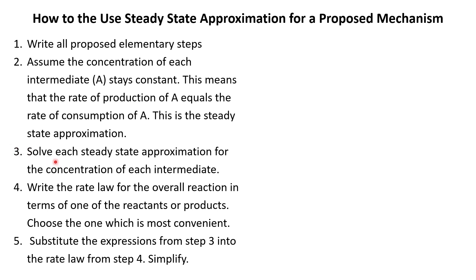Step three is we're going to solve each steady state approximation for the concentration of each intermediate. You may have one intermediate, two intermediates, or more, so you might have multiple steady state approximations. Step four is we're going to write the rate law for the overall reaction in terms of one of the reactants or products — whichever one is most convenient based on the reaction.